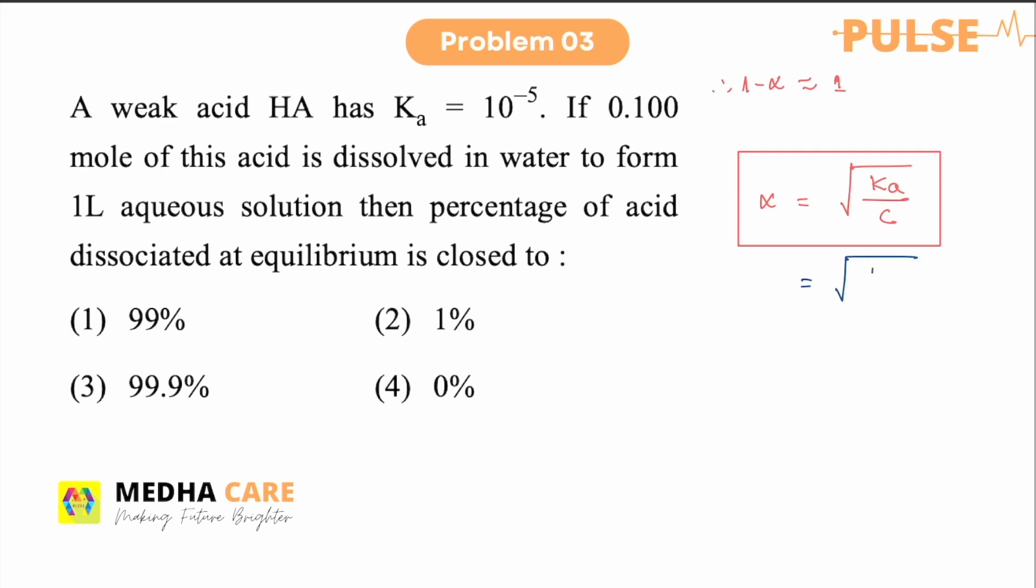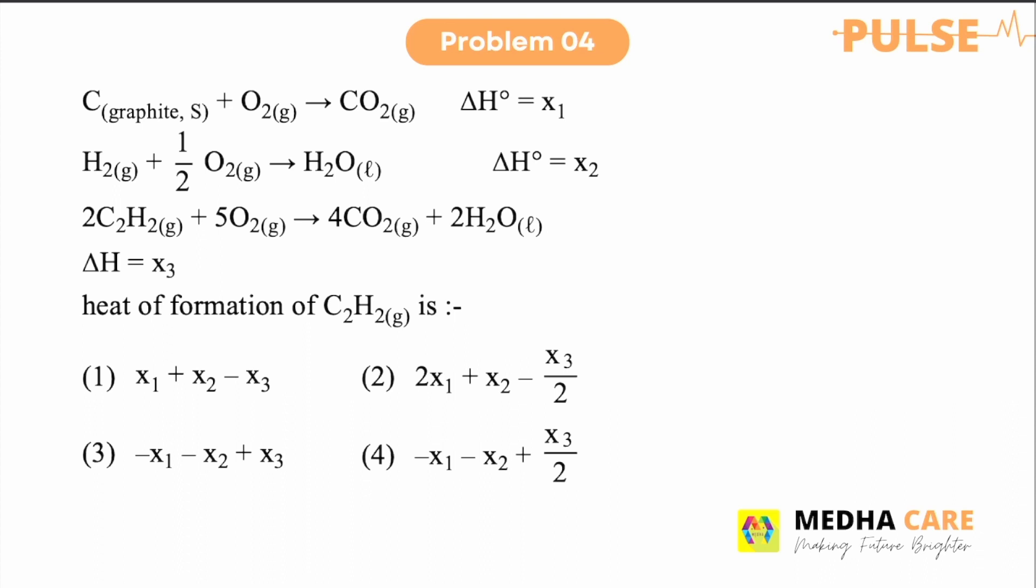Now here we have Ka value 10 to the power minus 5. And the molarity, 0.1 mole of the acid in one liter aqueous solution. So that means it is 0.1. So we will get 10 to the power minus 4, or 10 to the power minus 2. So this is the alpha value. So percentage dissociation that is alpha into 100. Alpha is 10 to the power minus 2, times 10 to the power 2. So that is 1%. So the correct answer will be 1%.